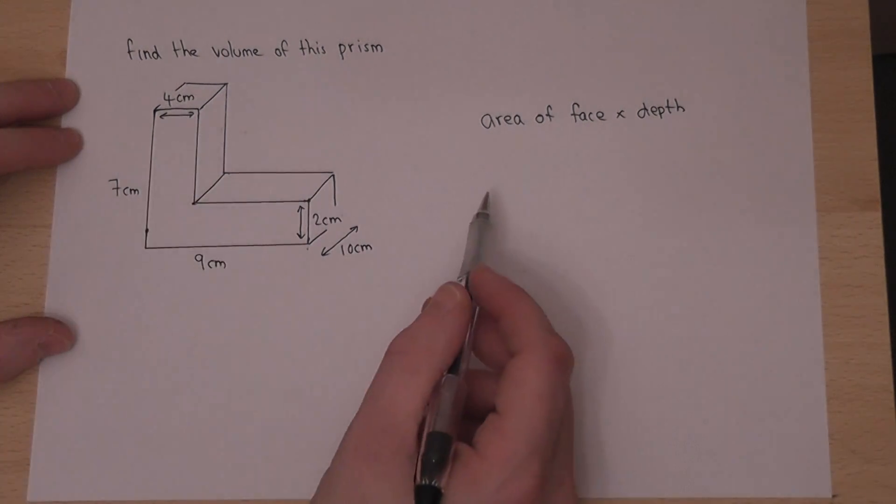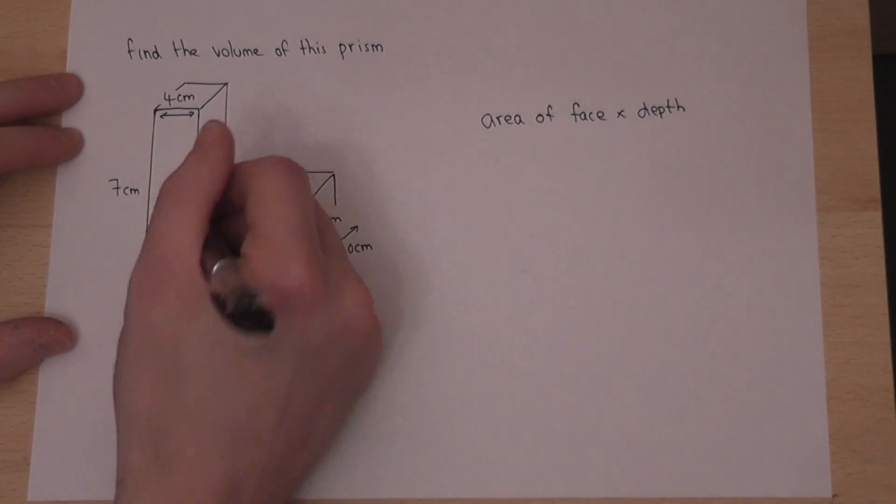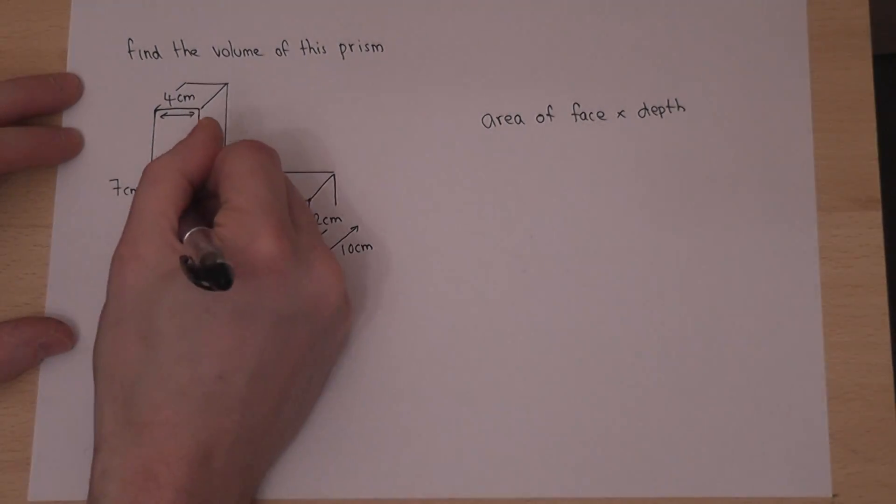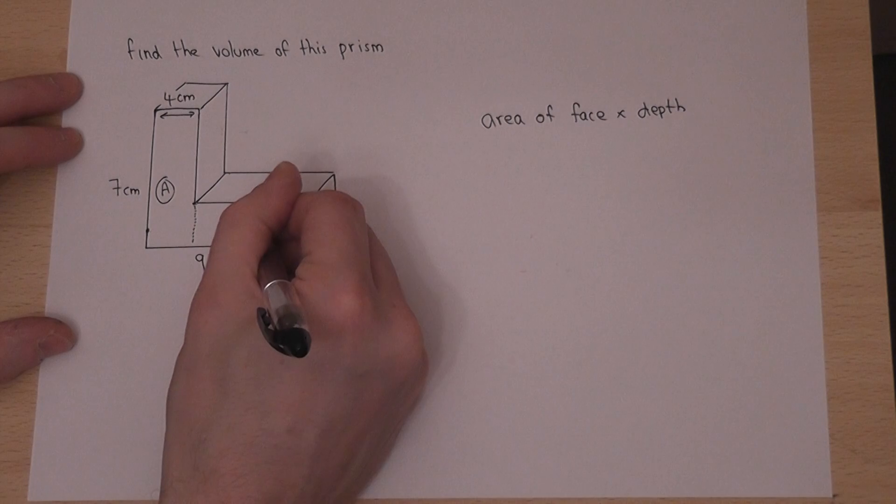Now this face is composed of two rectangles. So if I put a dash down here, I've got A and I've got B.